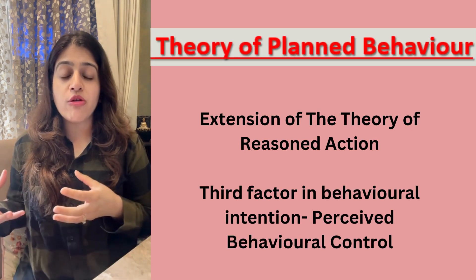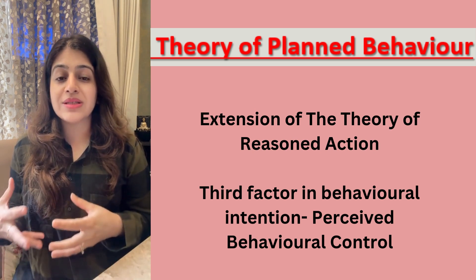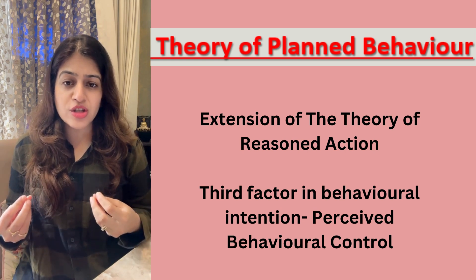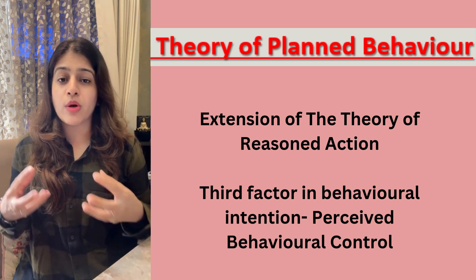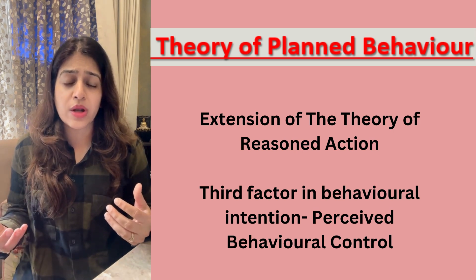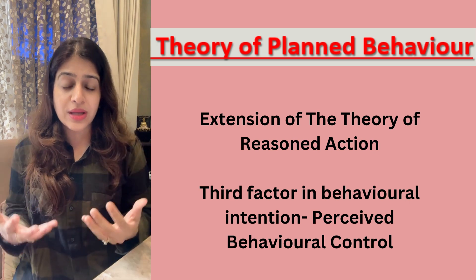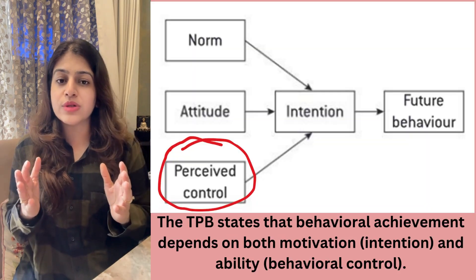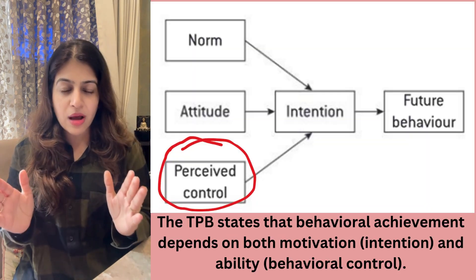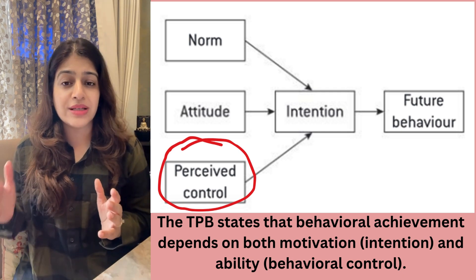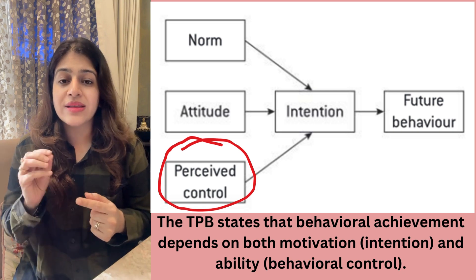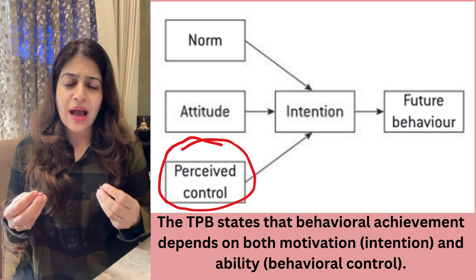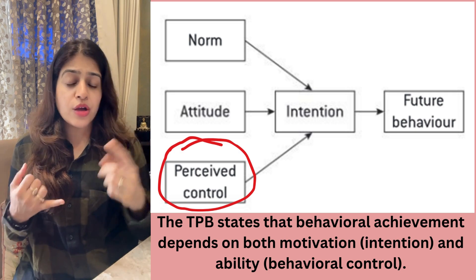That is why, ten years later, the Theory of Planned Behavior (TPB) was introduced. Psychologists realized that not everything can depend on intention alone; otherwise all behavior would be perfectly predictable. If you look at the diagram, the TPB diagram is exactly the same as TRA's, except one factor has been added: perceived behavioral control.